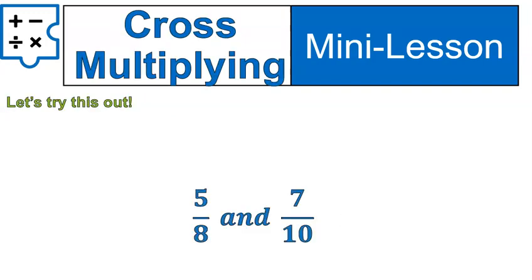If I had the ratios of 5 eighths and 7 tenths, and I was asked to compare them using cross-multiplying, I'd simply multiply: 10 times 5 is 50, 8 times 7 is 56. And now I can put in that symbol that 50 is less than 56. Therefore, 5 eighths is less than 7 tenths.